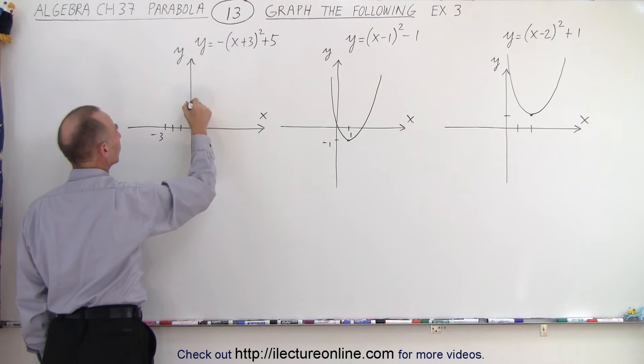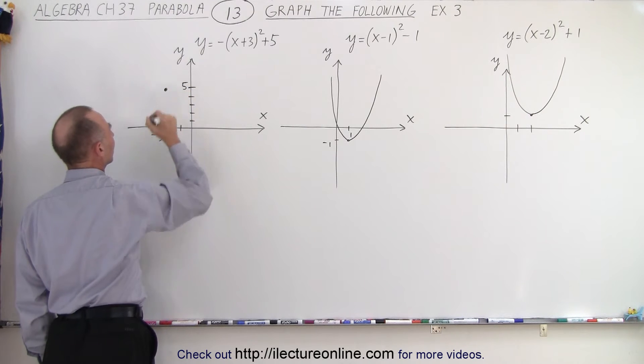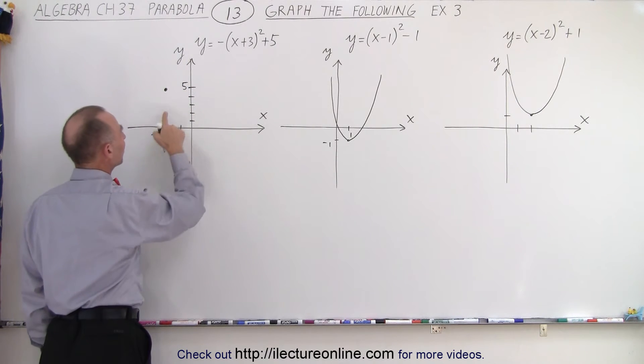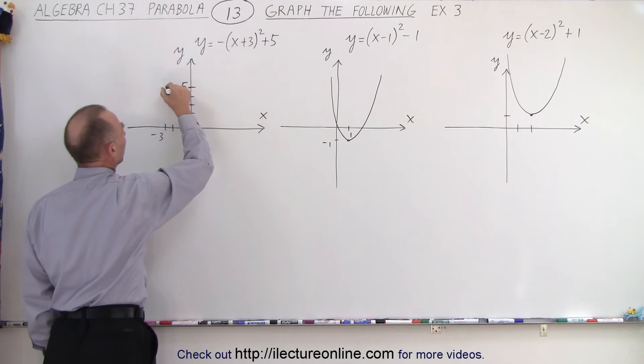Up by five, one, two, three, four, five. And so the vertex will be right there at the point minus three, five, and it'll open downward. So the parabola will look like this.